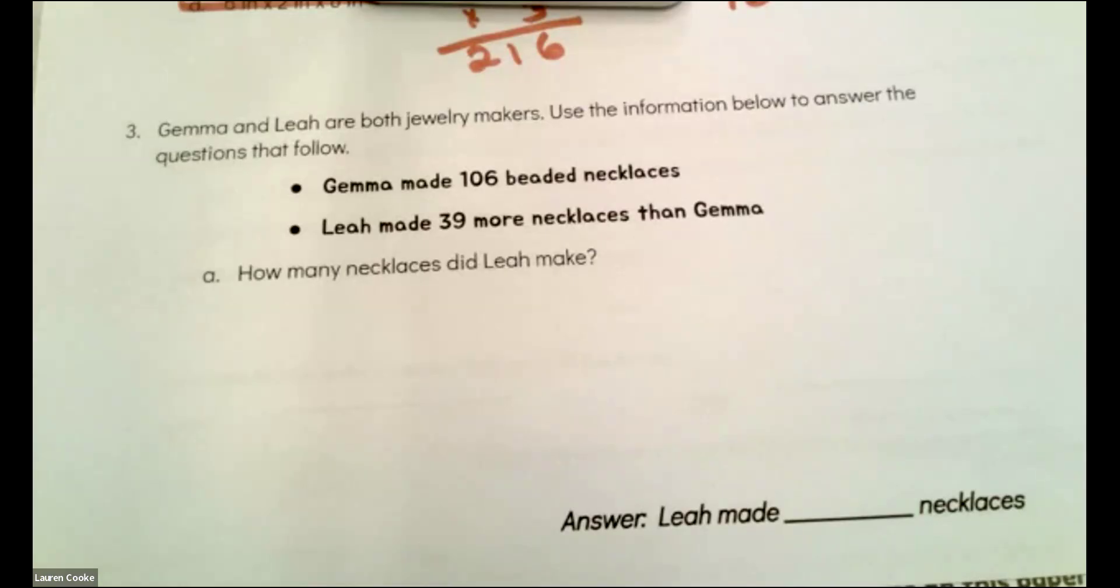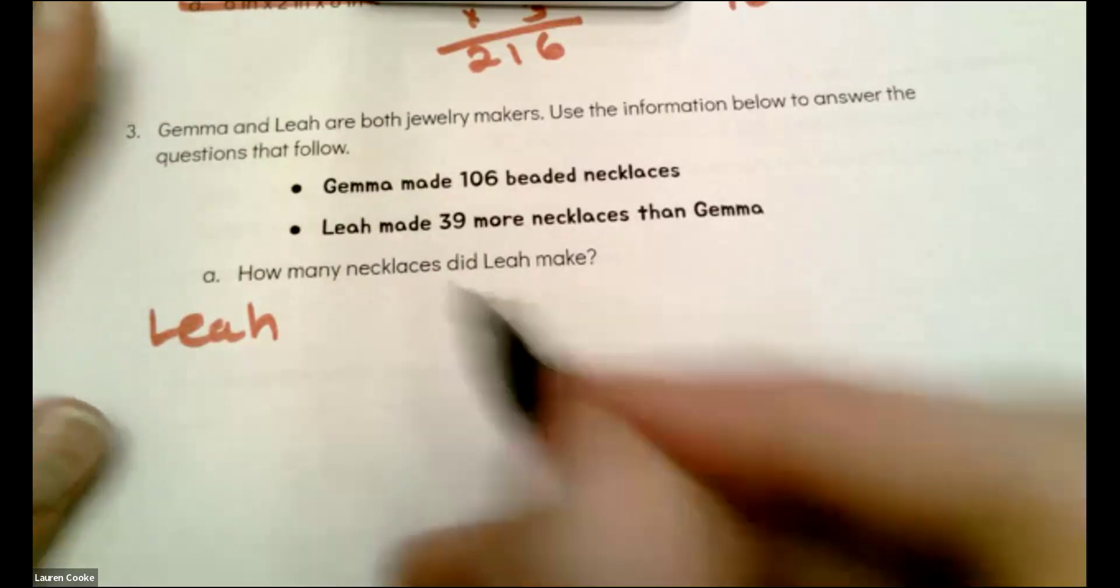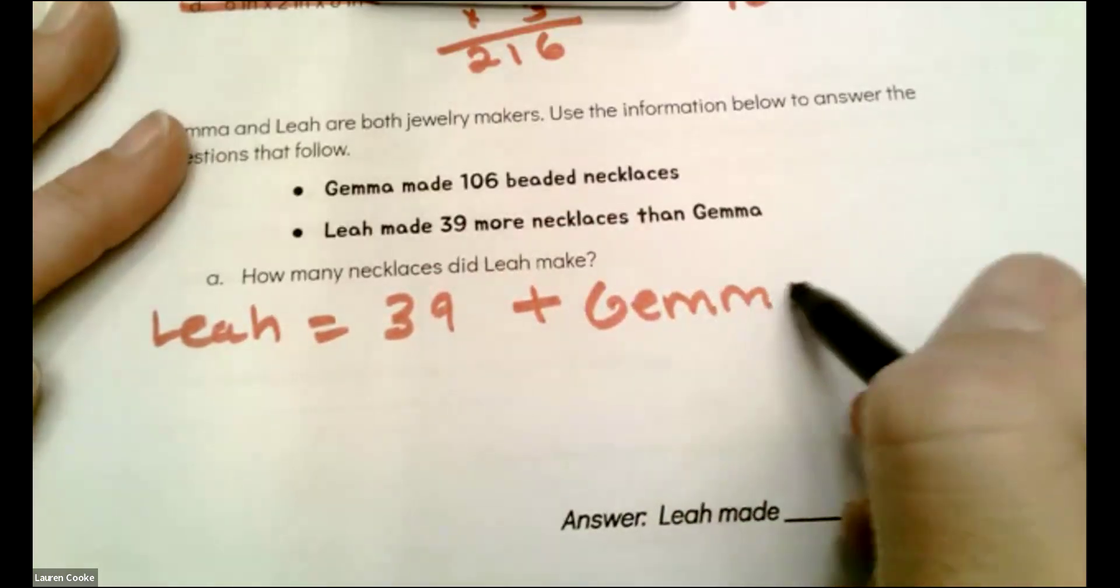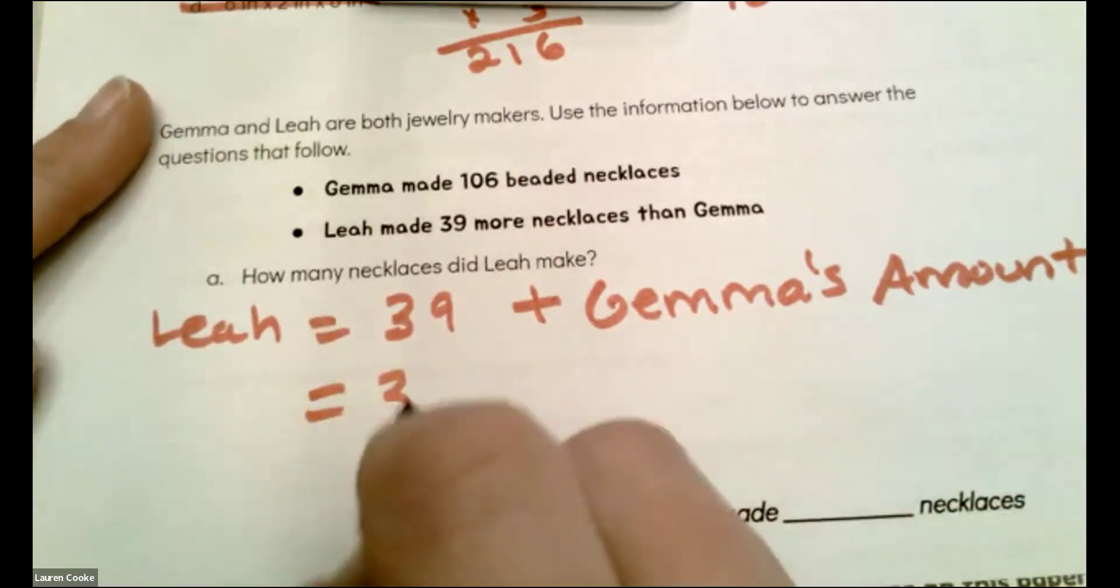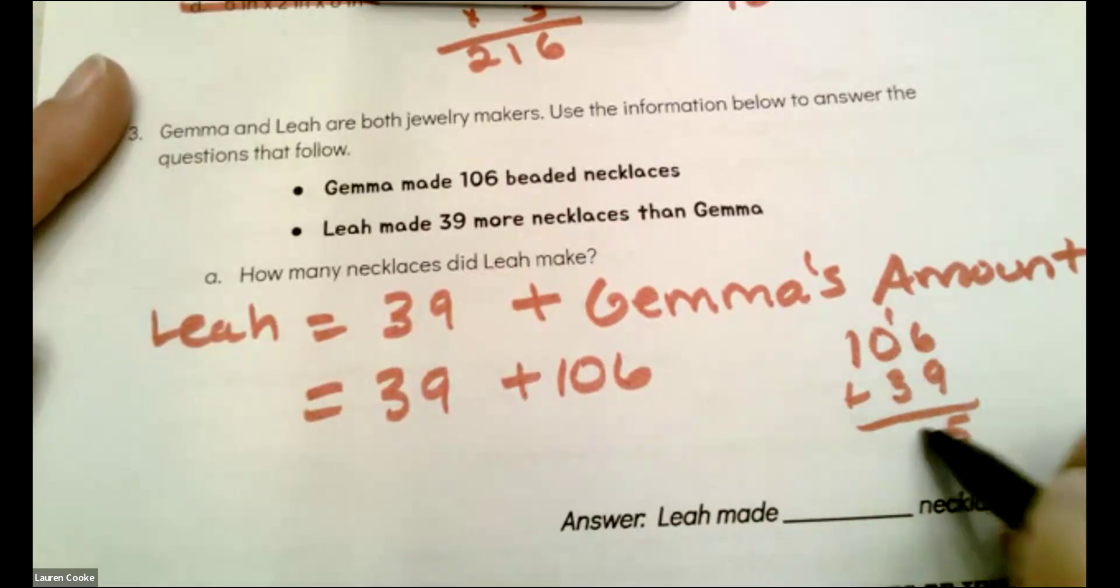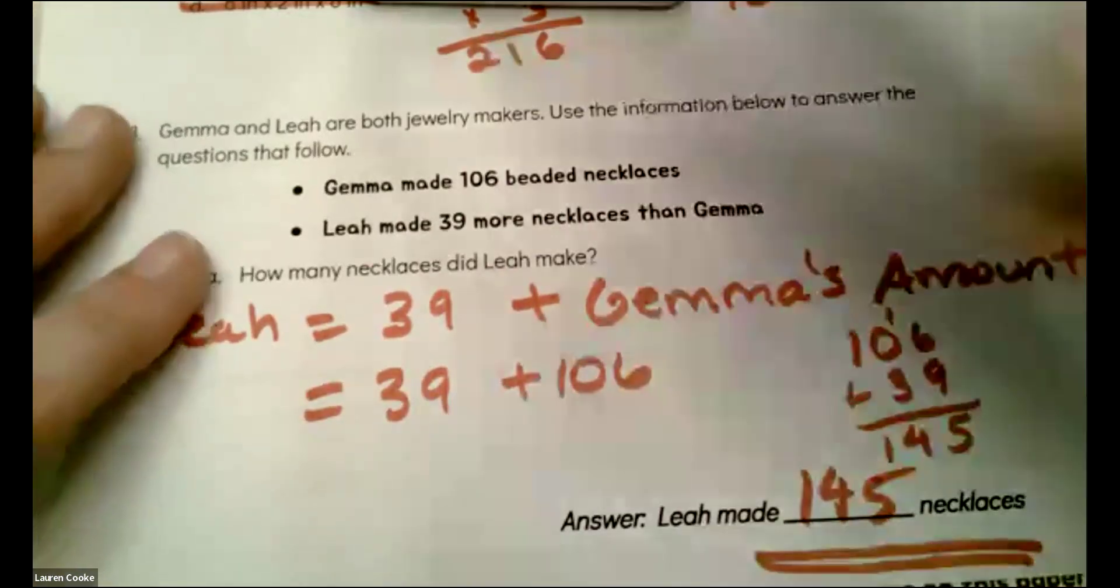Gemma and Leah are both jewelry makers. Use the information below to answer questions that follow. Gemma made 106 beaded necklaces. Leah made 39 more than Gemma. So Leah has more than Gemma. So Leah is, watch, I'm writing an equation 39 more than Gemma's amount. So I'm going to get 39 plus 106 and I'm kind of old school. So I got to do it this way. 15. I don't have to, but all right. So Leah made 145 necklaces. All right, moving on. Let's see what's next.